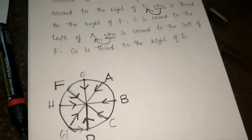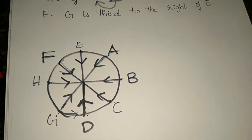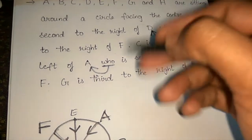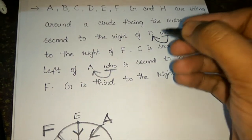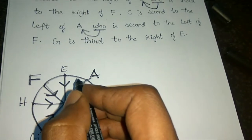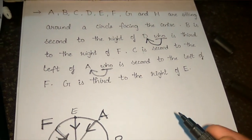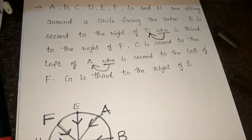First right is H. We can now solve the complete arrangement. The circular seating arrangement becomes clear once all clues are applied. Thanks for watching — any doubt, please comment. Please subscribe to my channel, like this video, and don't forget to comment. Thanks and bye-bye!